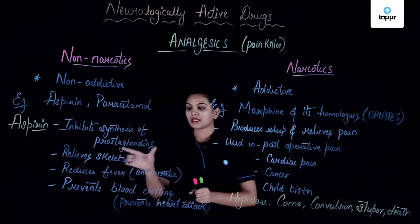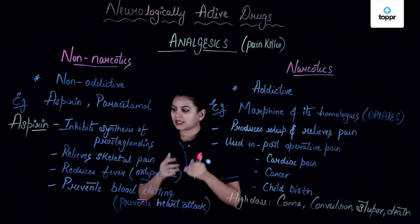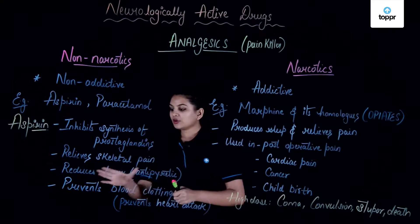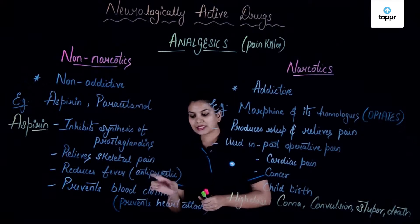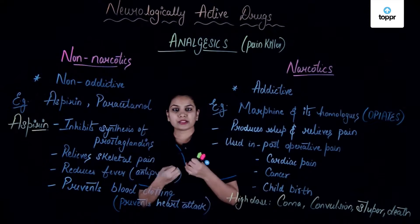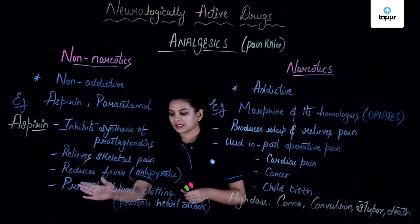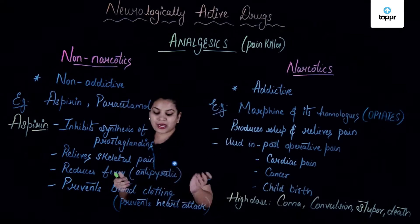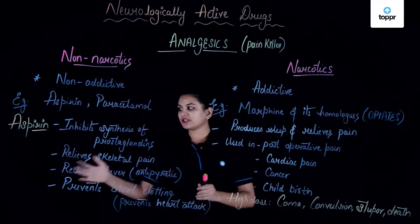Prostaglandins are substances in our body that cause inflammation and pain. Since aspirin inhibits their synthesis, it relieves skeletal pain. It also reduces fever, and hence we can call it an antipyretic — 'anti' meaning opposite and 'pyre' meaning heat. When a person has fever and body pain, a doctor might suggest aspirin or paracetamol. Additionally, since aspirin prevents blood clotting, it can be given to patients with heart disease to help prevent heart attacks.